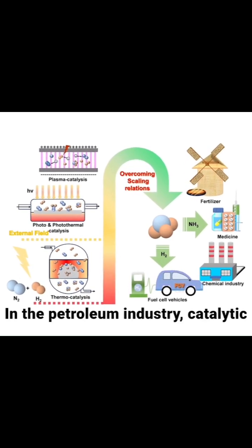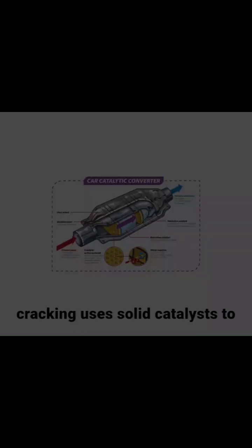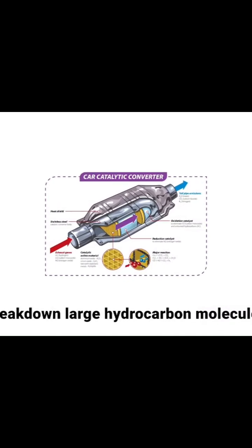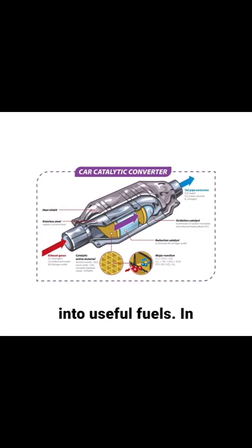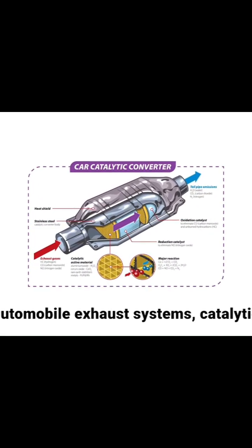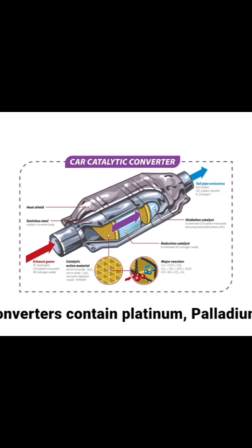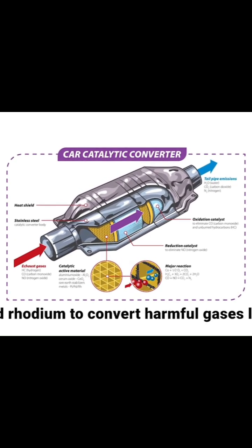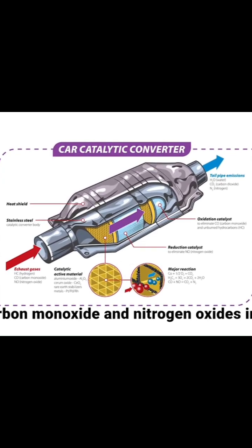In the petroleum industry, catalytic cracking uses solid catalysts to break down large hydrocarbon molecules into useful fuels. In automobile exhaust systems, catalytic converters contain platinum, palladium, and rhodium to convert harmful gases like carbon monoxide and nitrogen oxides into less harmful substances.